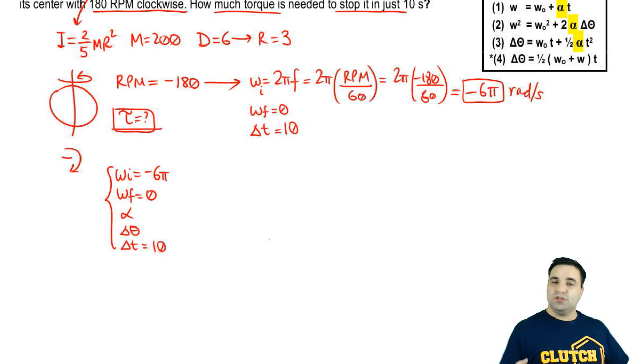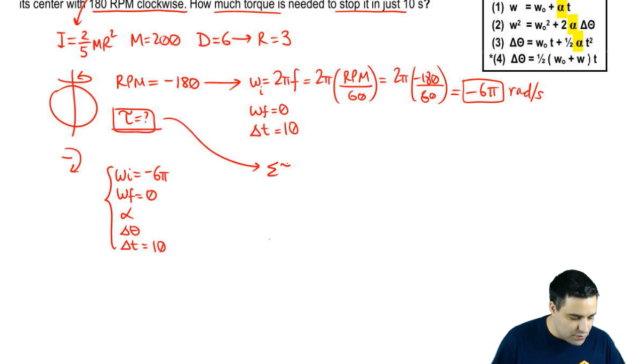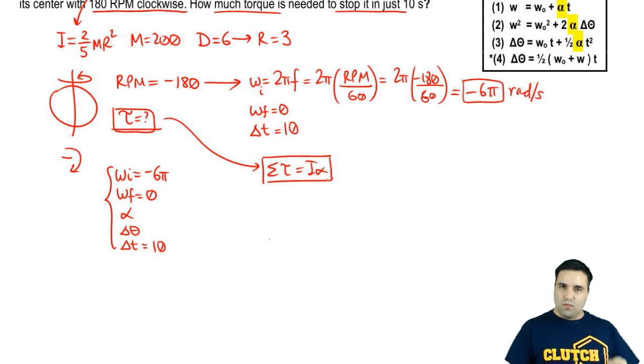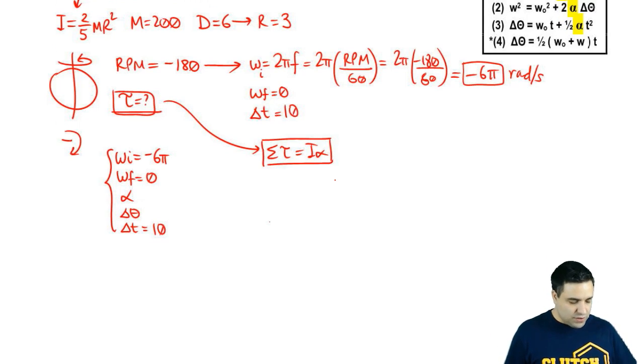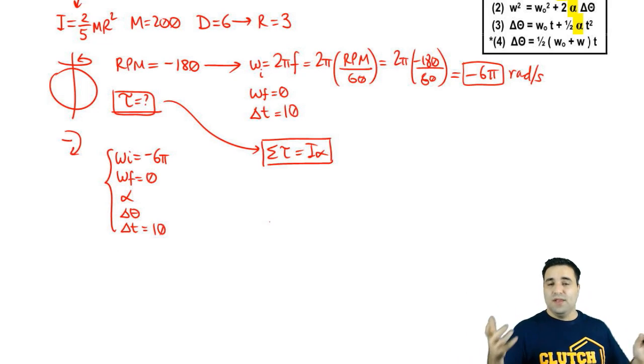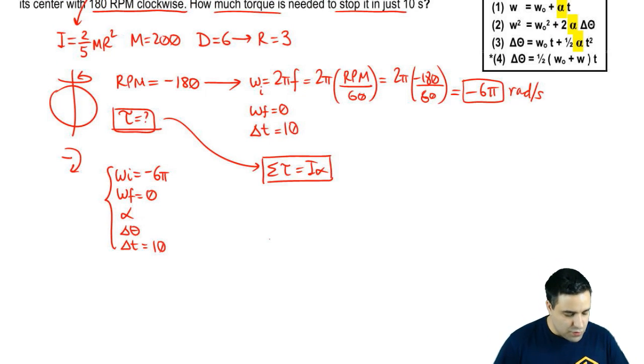But really, what we're looking for is torque. You might actually have started this question by just writing that the sum of all torques equals I-alpha, and that's perfectly fine as well. If anything, that's a more directed way to the answer. There's only one torque here. This thing is spinning, and you're applying a torque to it to make it stop.